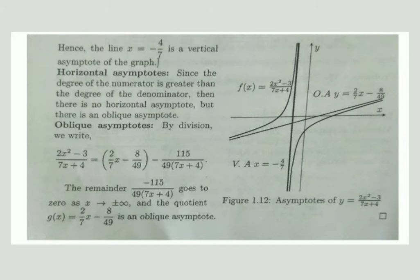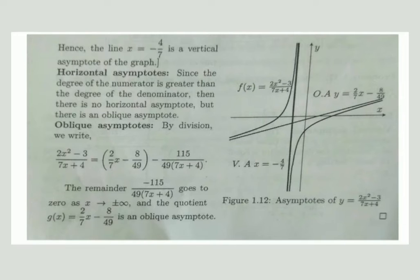As x tends to ±∞, the remainder goes to zero and the quotient y = 2x/7 - 8/49 is the oblique asymptote. Looking at the graph, the vertical asymptote is at x = -4/7 on the left-hand side, and the oblique asymptote is y = 2x/7 - 8/49.